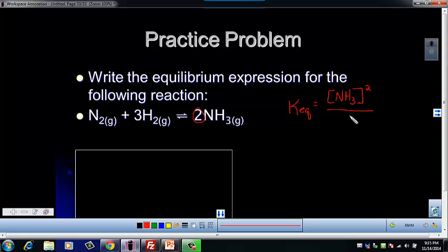We divide by the concentration of nitrogen, which has a coefficient of 1 so it doesn't get an exponent. Then we multiply by the concentration of hydrogen cubed, because that has a coefficient of 3.